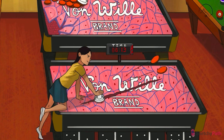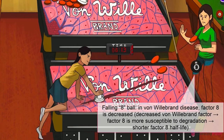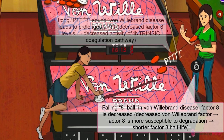The second function of von Willebrand factor is to bind factor VIII in circulation and protect it from degradation, significantly increasing its half-life. This allows factor VIII to participate in the intrinsic coagulation pathway. See that eight ball falling to the floor? In von Willebrand disease, reduced von Willebrand factor means factor VIII isn't going to hang around for very long. Remember, factor VIII participates in the intrinsic clotting pathway, the function of which is measured by partial thromboplastin time, abbreviated APTT.